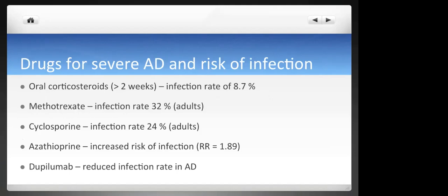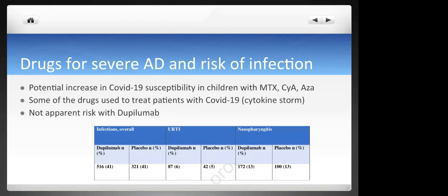We know the drugs used for severe atopic dermatitis may pose a risk of infection. Corticosteroids, methotrexate, cyclosporine, and azathioprine — the classic immunosuppressants — have an increased risk of infection throughout the period of treatment. On the other hand, dupilumab does not have this increased risk of viral infection, and there is even a reduced rate of infection in patients successfully treated for atopic dermatitis.